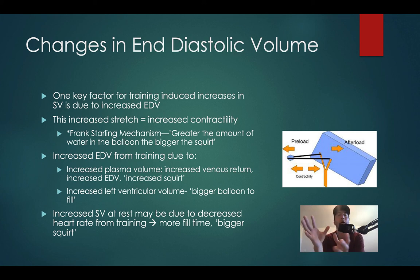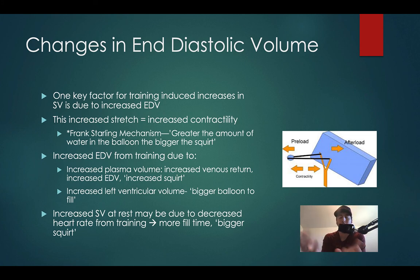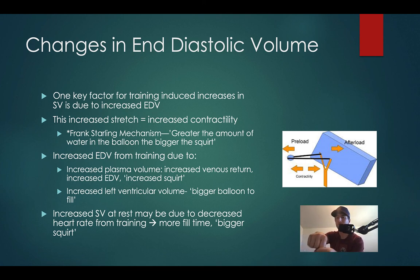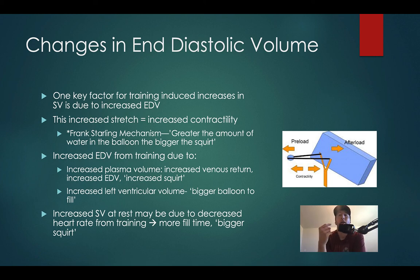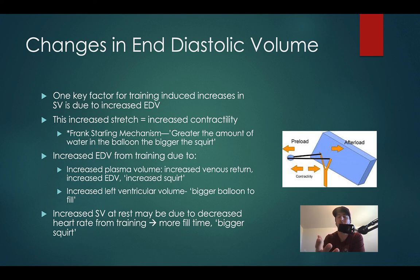One of the major ways to increase end-diastolic volume is through the Frank-Starling mechanism: increased stretch equals increased contractility. As we stretch out the heart during filling, we increase the amount of actin-myosin interactions that can occur — the amount of myosin crossbridge attachment sites. Think of it like pulling back a slingshot: the further you load it, the faster the blood is going to come out. We can manipulate that stretch by increasing plasma volume and increasing venous return — pumping blood back to the heart faster to fill it just a little bit more.